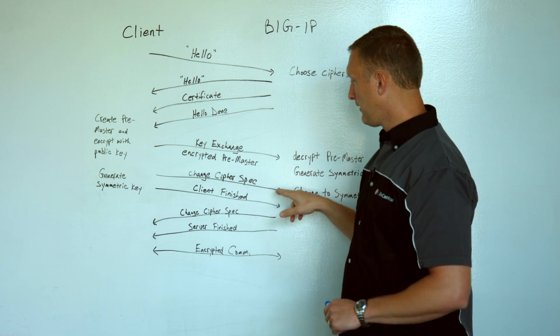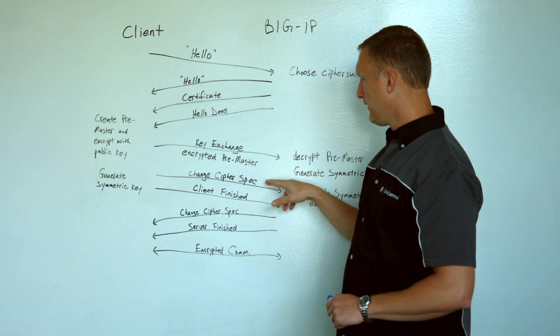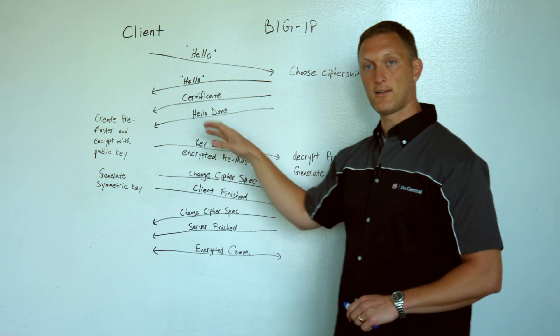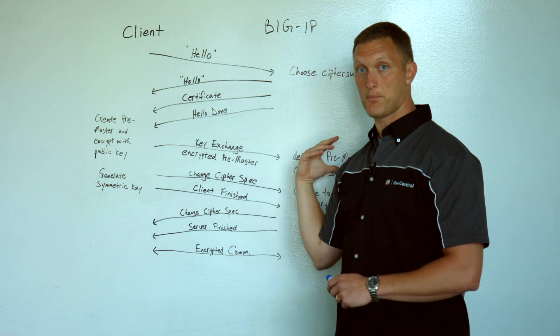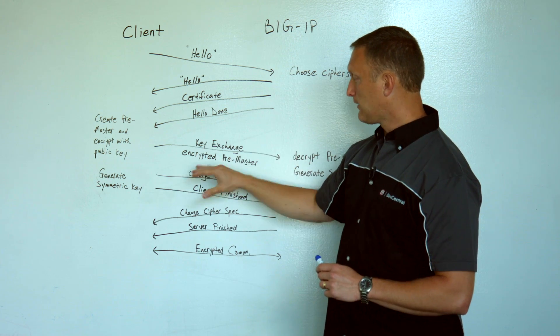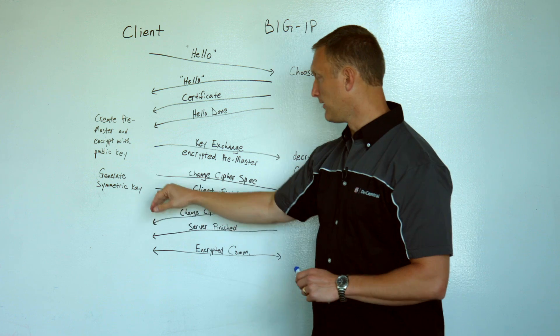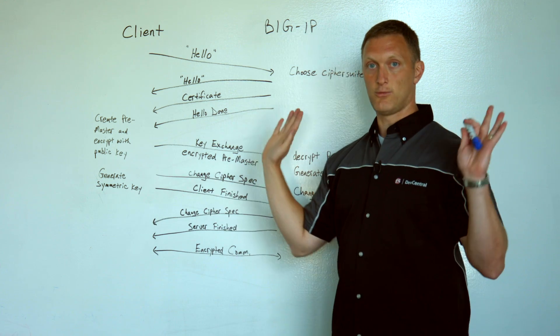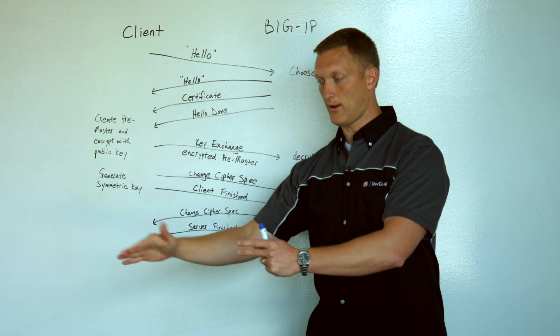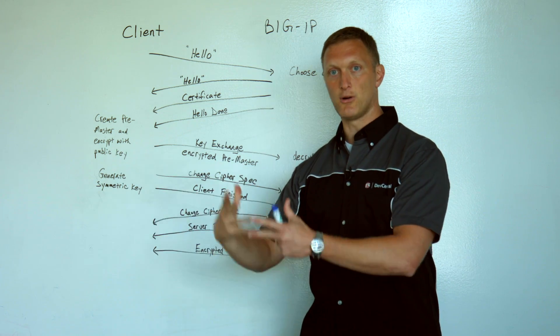Then the client is going to send what's called a change cipher spec message and then a client finish message. The change cipher spec is basically the client telling the server, the BIG-IP now, hey BIG-IP, we're done with the key exchange and now I'm changing to the symmetric encryption. And then I'm going to send you a client finish, which means I'm done. So now I've moved on to the symmetric part of this, and that's how we're going to communicate now with this bulk encryption.